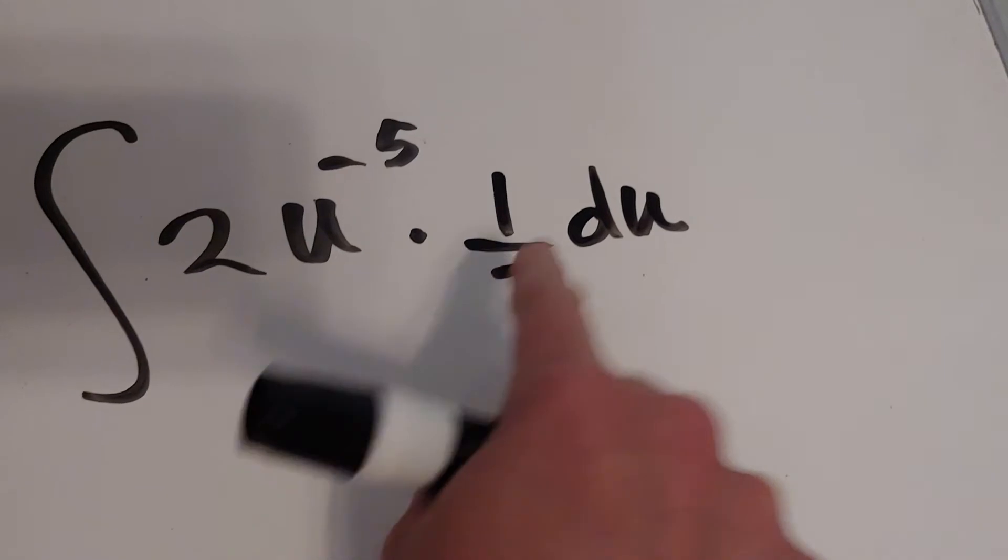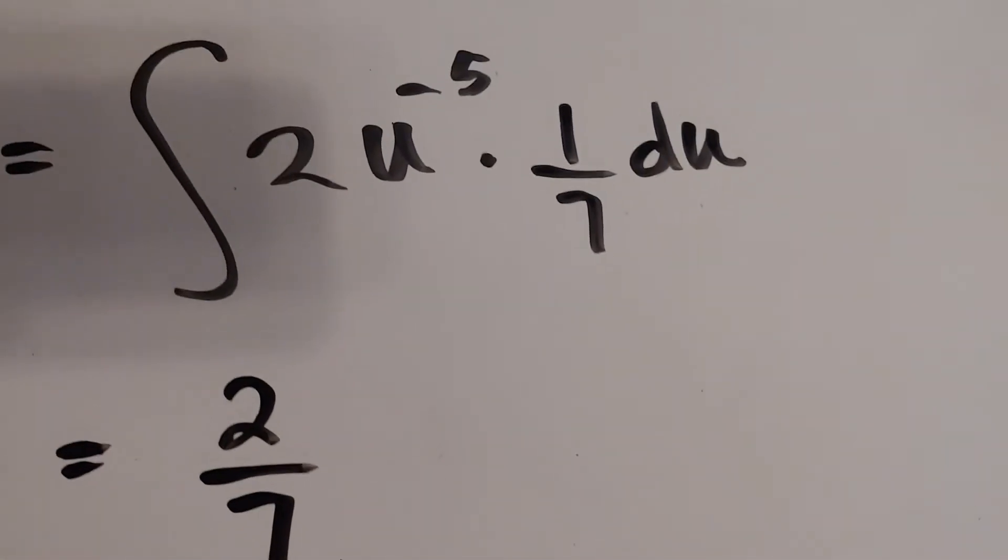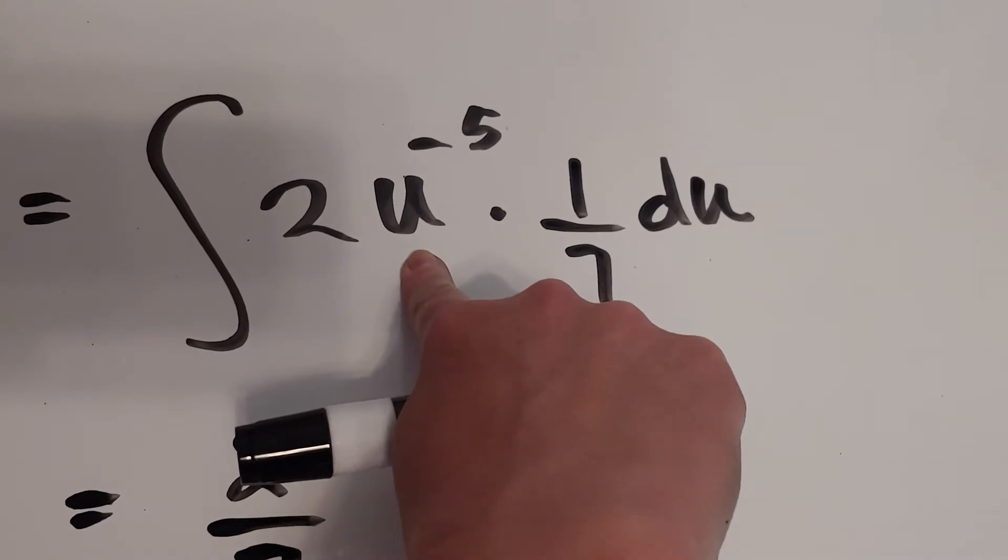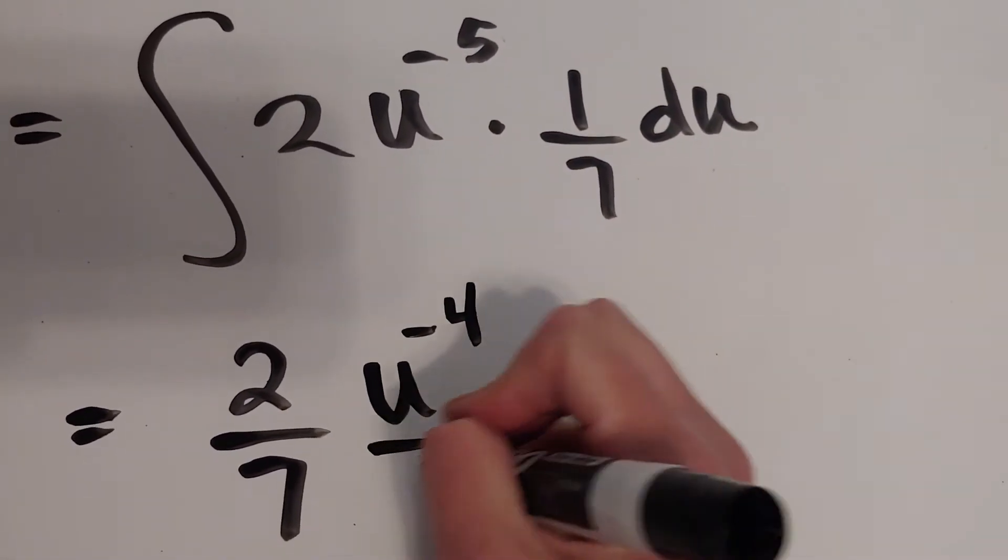So what's going to happen is that 2 and that 1 7th are going to join forces to be 1 coefficient, which is a 2 7th. And then this u to the negative 5th, we're going to go ahead and integrate. So add a 1, then divide.